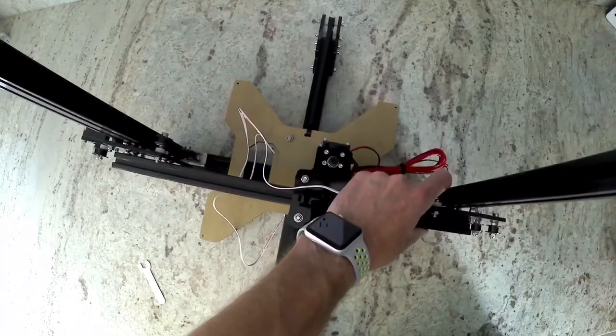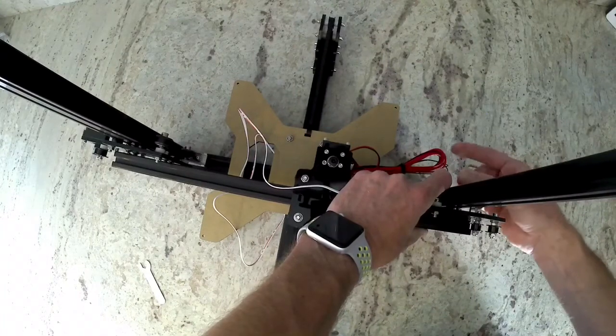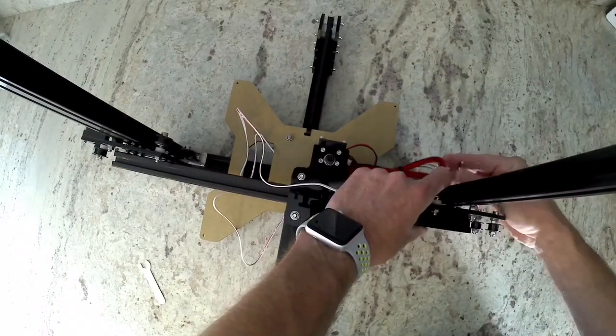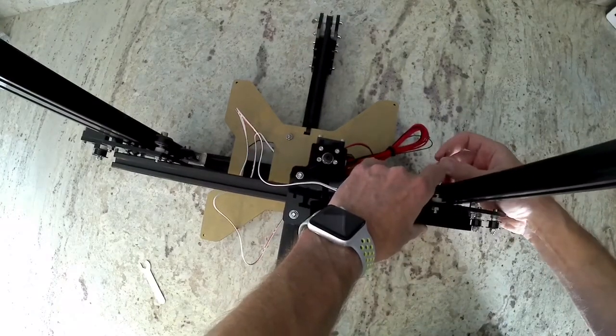Go ahead, hold it up there. Make sure that the extrusion doesn't interfere with the idlers for the belt on the x-idler side or the x-motor side. And then go ahead, hold it tight and tighten those bolts down so that the t-nuts will lock in place.